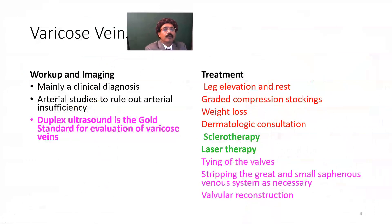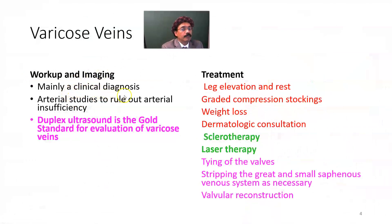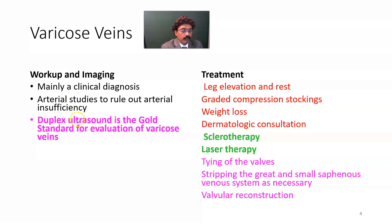How can we diagnose varicose veins? Diagnosis is mostly clinical, but we study the arteries to rule out any arterial insufficiency. Duplex ultrasound is the gold standard for evaluation of varicose veins. We can identify the exact site of blockage — which perforating vein valves are blocked or which other valves in the vein are blocked — and assess the flow of blood and where it is blocked.